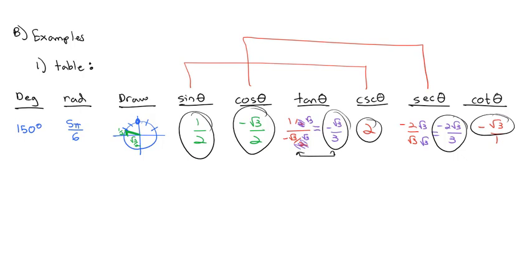Let's try another one, this time starting with radians. Let's do 7π over 4. The over-4 values are the quarters: counting around 1, 2, 3, 4, 5, 6, 7π over 4 is in the bottom right, the fourth quadrant. It's right in the middle, so we know it's root 2 over 2 in both directions. It's also 45 degrees less than 360, so that's 315 degrees.